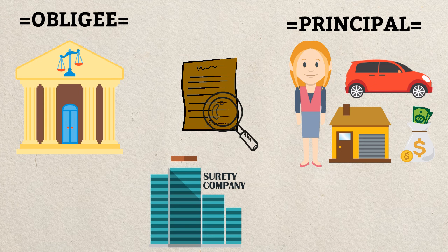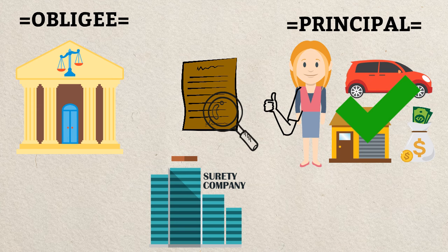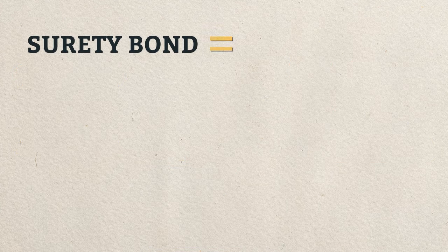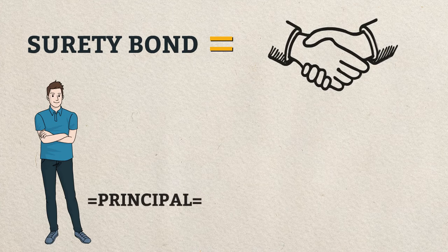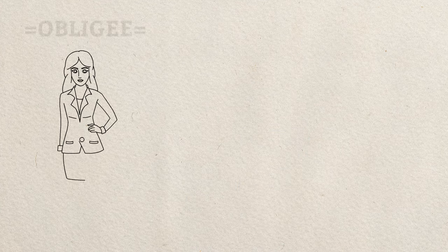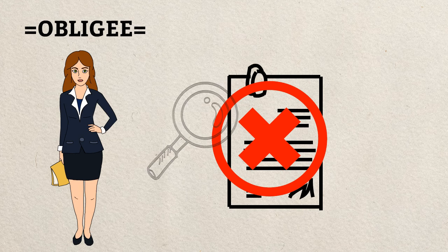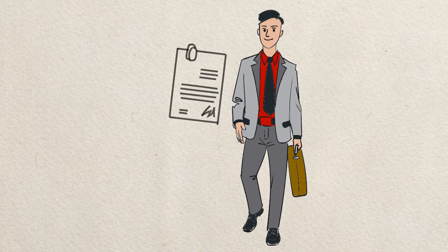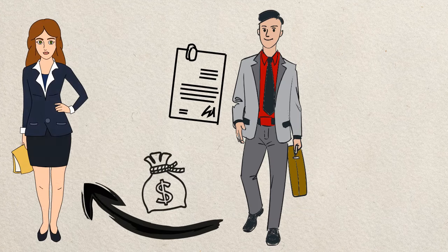Therefore, the guardian, by securing a guardianship bond, assures the court that they are highly capable of exercising proper conduct in the legal custody of their beneficiaries' belongings and finances. Simply put, the surety bond is used as a guarantee that the principal will get the job done according to the terms of a contract. If the obligee feels that the terms of a contract were not fulfilled, or if a business is found to be in breach of the laws that regulate their business, a claim can be made against the surety bond. If the surety finds that the claim is valid, the surety will indemnify the obligee, and the principal is responsible for reimbursing the surety for the claim and any legal costs.